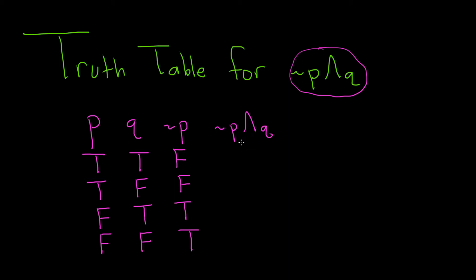When we're looking at not P and Q, in order for this to be true, they both have to be true. Otherwise, it's false. So in the first case here, you see not P is false, so this is false. In the second case, they're both false, so it's false.